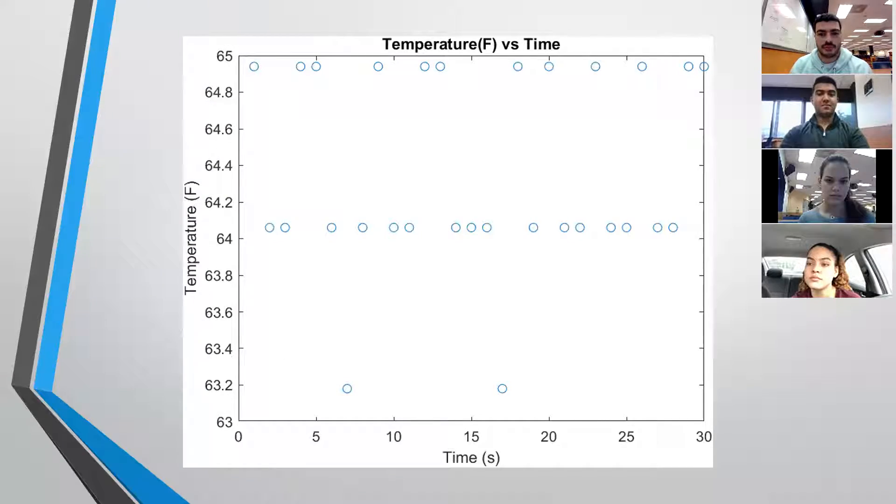This is the graph, so you can see it in full screen. As you can see, the average temperature was around 64 degrees Fahrenheit with multiple scatter plots or points outside of the mean.